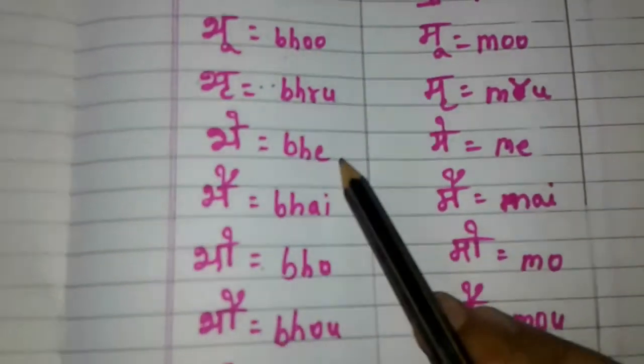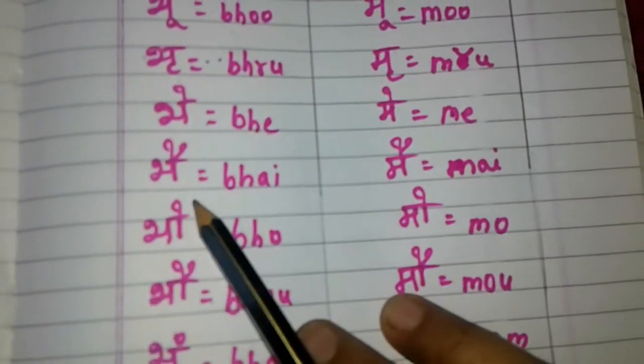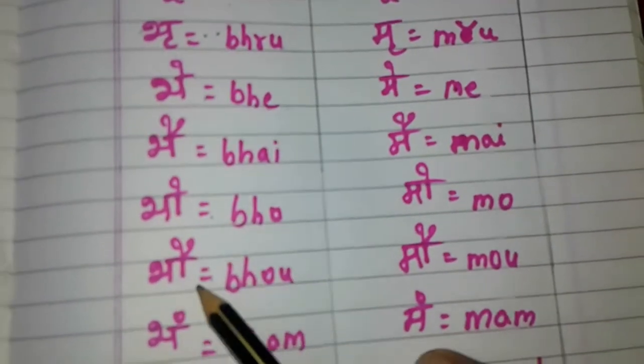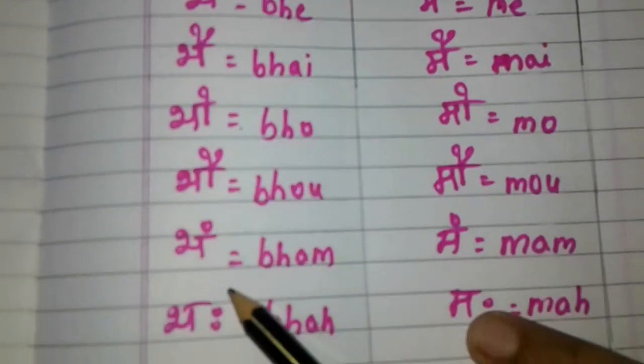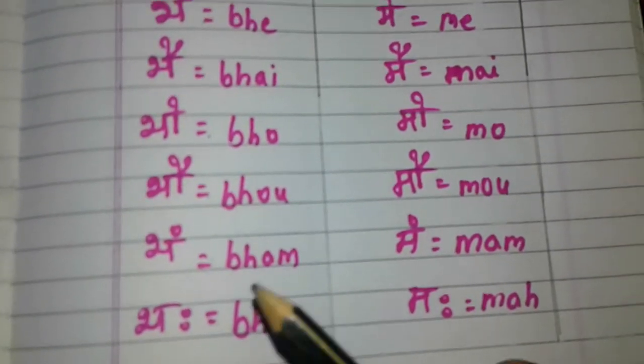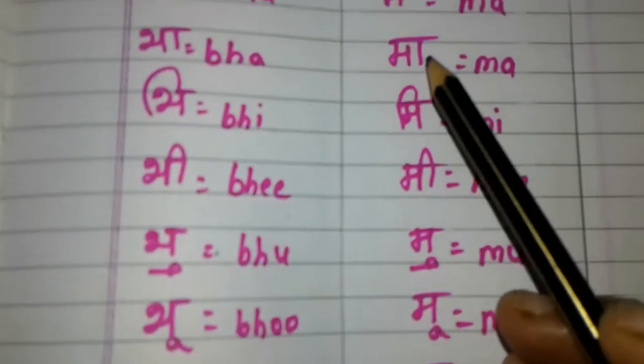Bhe, B-H-E. Bhai, B-H-A-I. Bho, B-H-O. Bhou, B-H-O-U. Bhyam, B-H-Y-A-M. Bhyah, B-H-Y-U. Okay, the next letter. Ma.